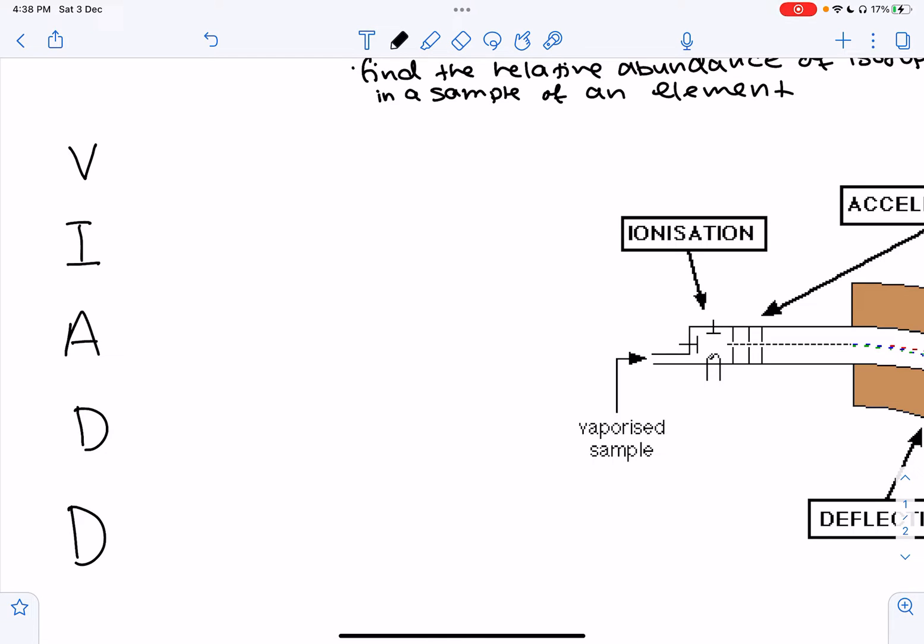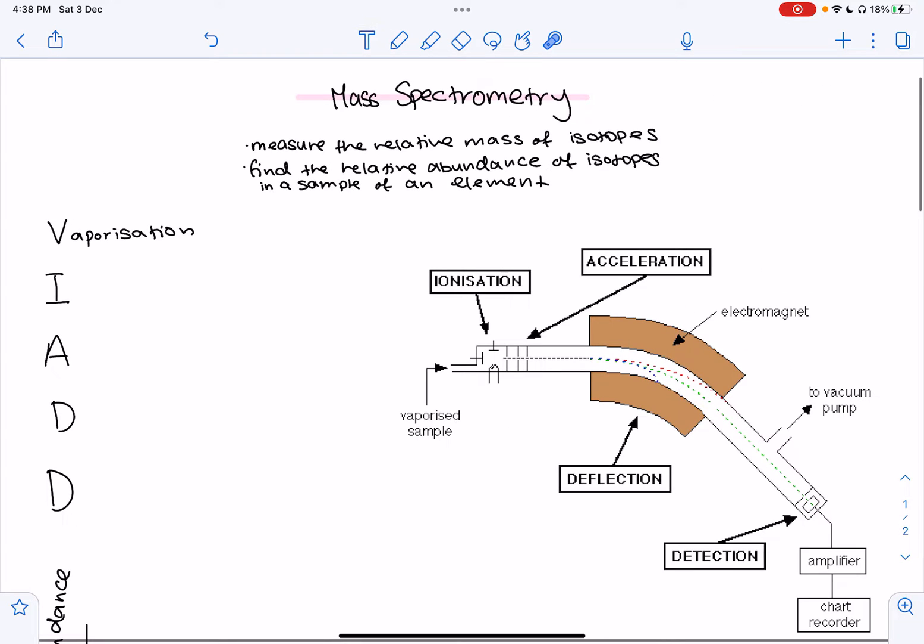The first step starts with a V, which is vaporization. Vaporization involves getting the sample from a solid or liquid state and changing it into a gaseous state. The vaporized sample is then passed into the ionization chamber, but it needs to be in gas state so we can separate the individual particles. As you can see, this is where the vaporized sample will go in.